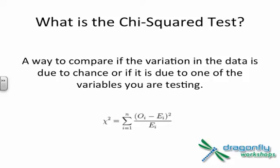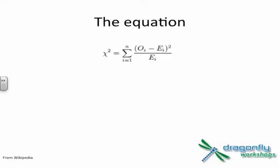So first of all, what is the Chi-Squared Test? It's a way to compare if the variation in the data is due to random chance or if it's due to one of the variables you are testing or observing. The equation is down there at the bottom. For some of you, it may look familiar. For some of you, it may not.